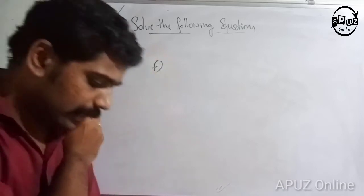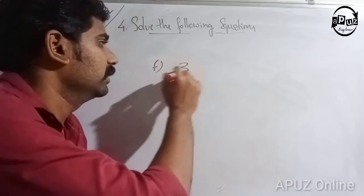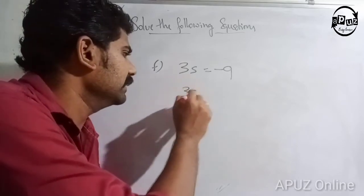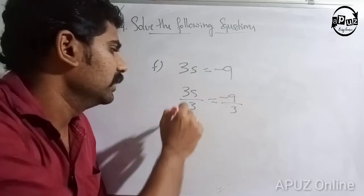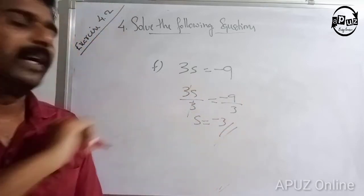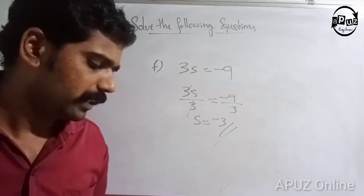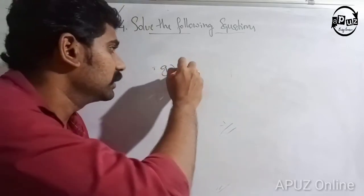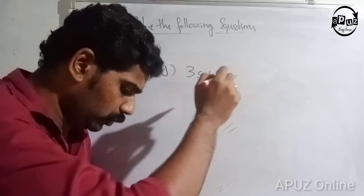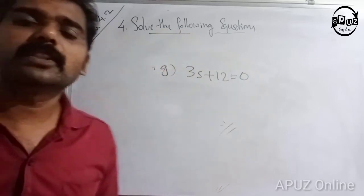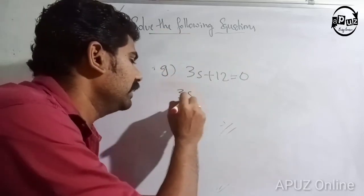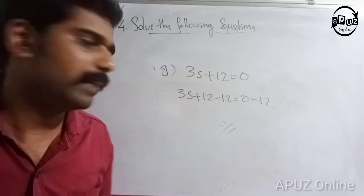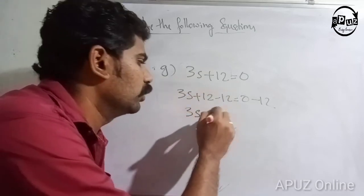Question F, then question G: 3s plus 12 is equal to 0. That is 3s is equal to 0 minus 12, so 3s is equal to minus 12.